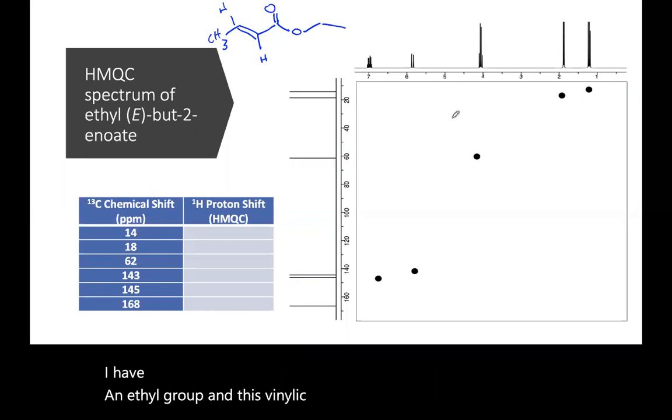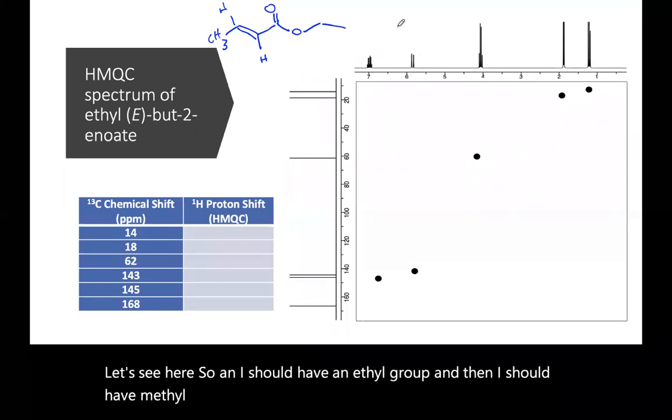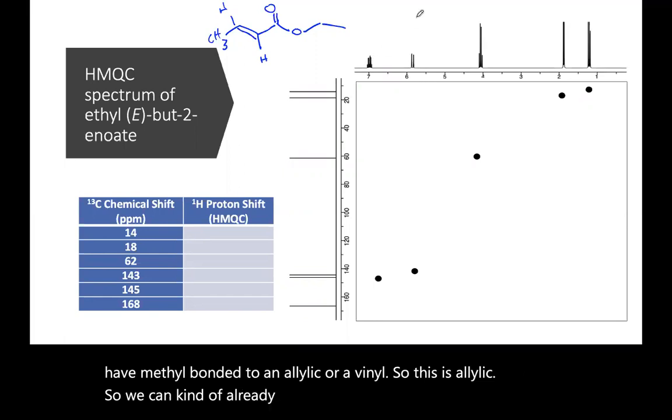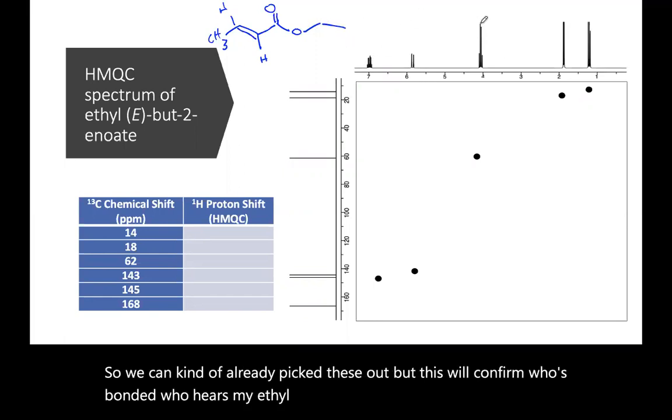So at 14 I've got a peak. I should have an ethyl group, and then I should have a methyl bonded to an allylic group, or a vinyl. So this is allylic. We can kind of already pick these out, but this will confirm who's bonded to whom. Here's my ethyl group. Let's go ahead and give these a name.